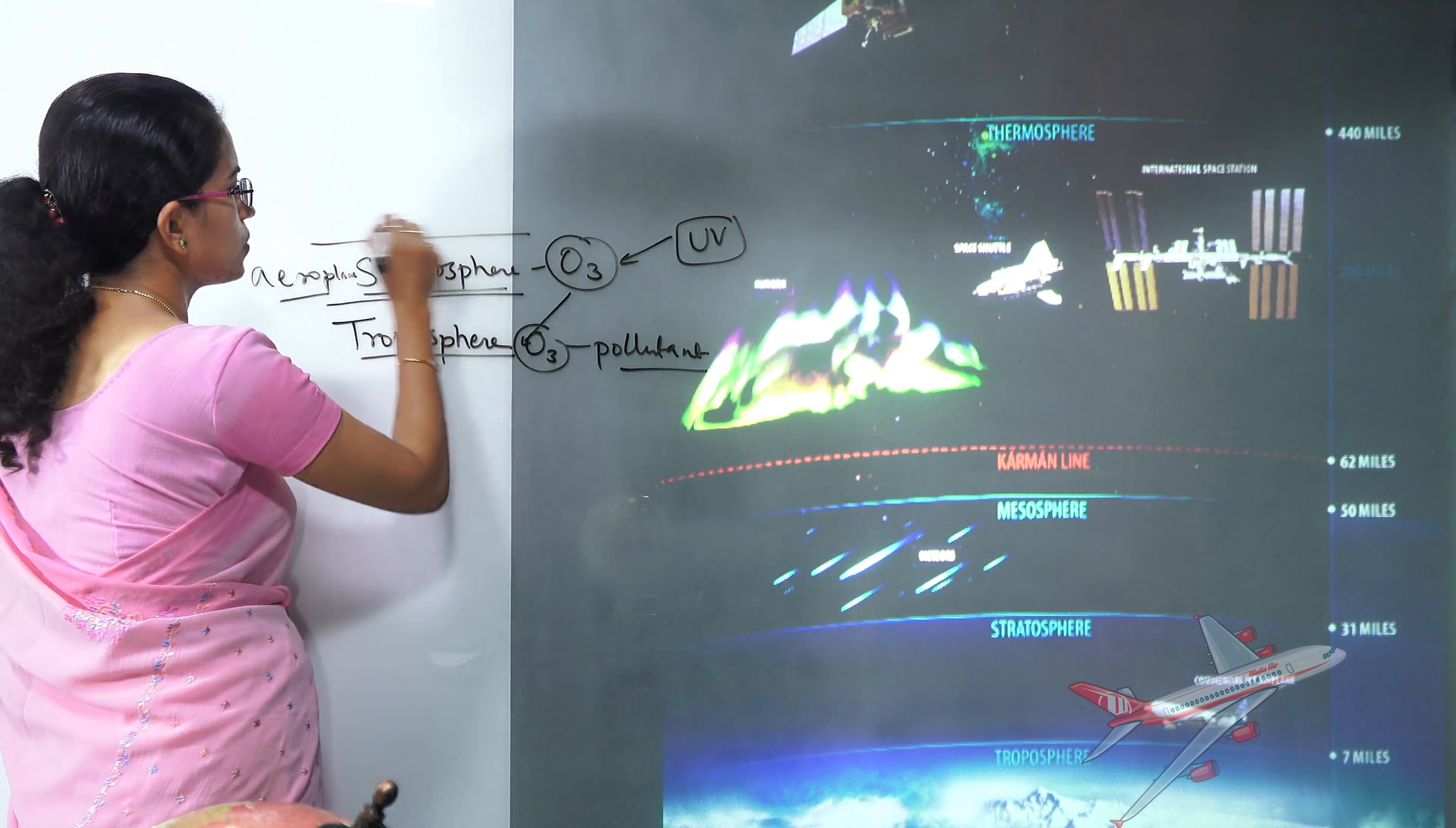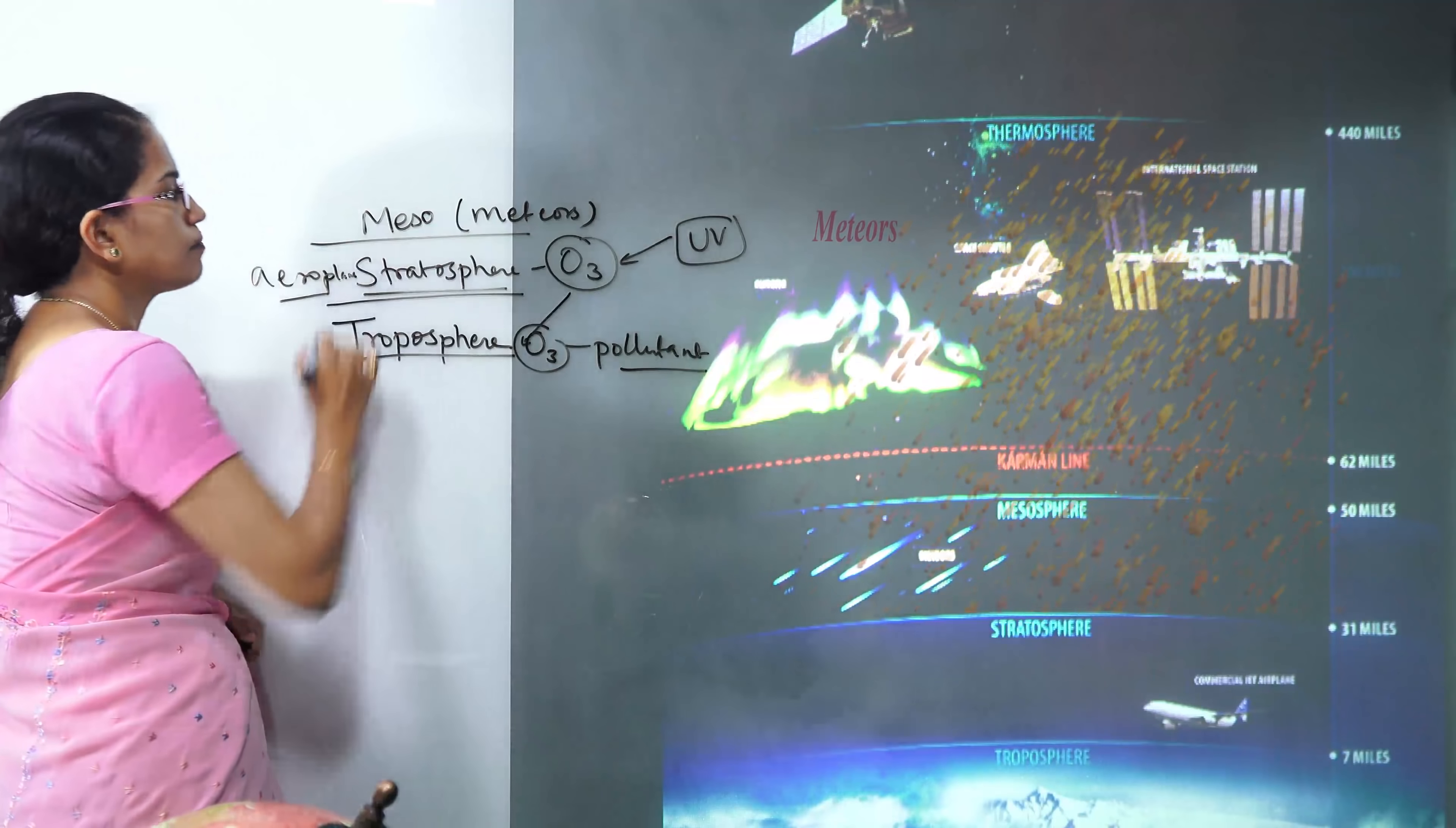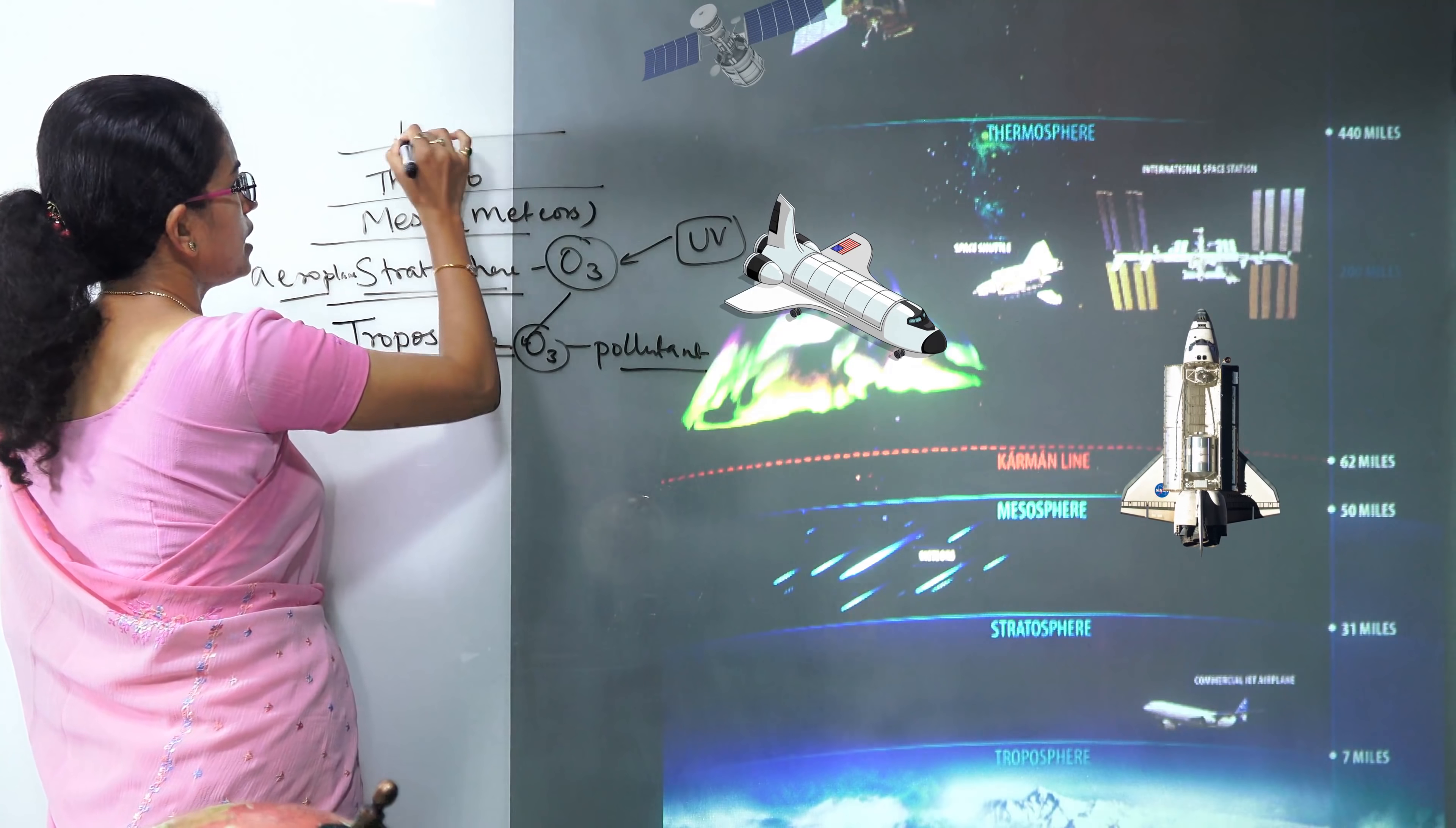Above the stratosphere you have mesosphere that could be seen. So this is the layer of mesosphere. Under mesosphere you have the meteors or the shooting stars that could be seen. Above the mesosphere you have thermosphere and beyond thermosphere you have the exosphere.